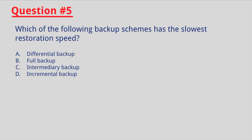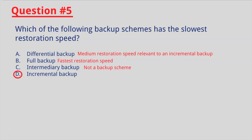Last question, number five: which of the following backup schemes has the lowest restoration speed? If you selected D, you are correct — incremental backup. A differential backup has a medium restoration speed relative to an incremental backup. A full backup has the fastest restoration speed, and an intermediary backup is not a standard backup scheme.